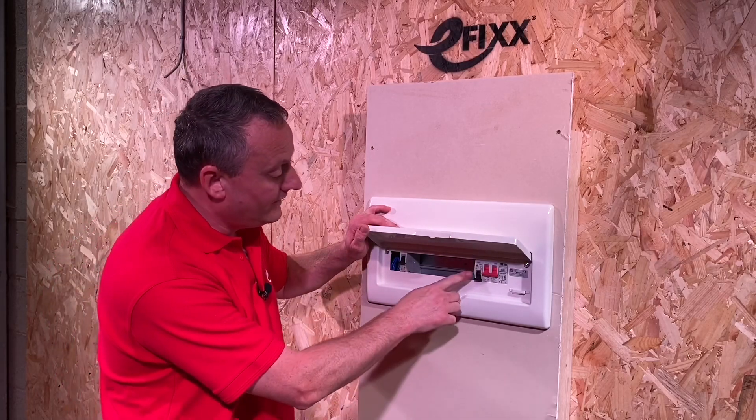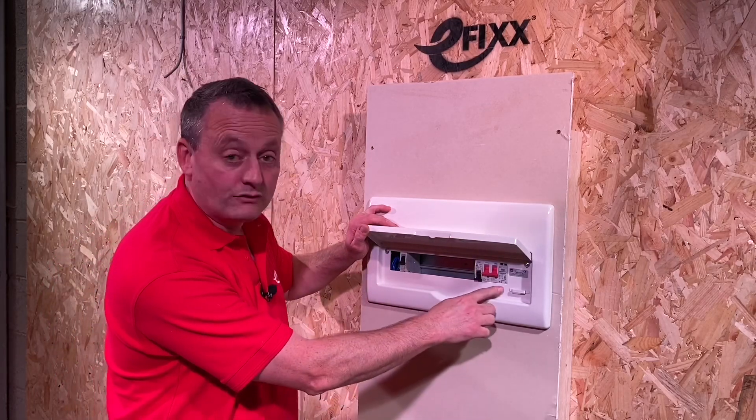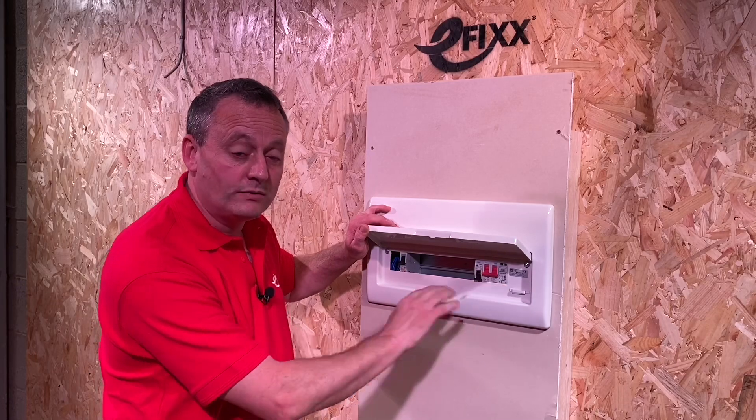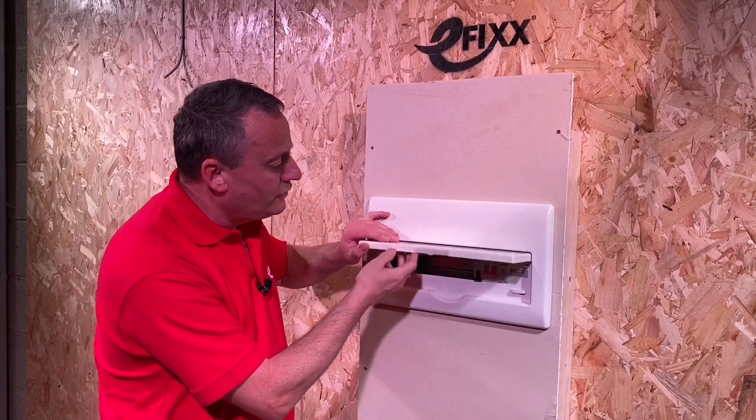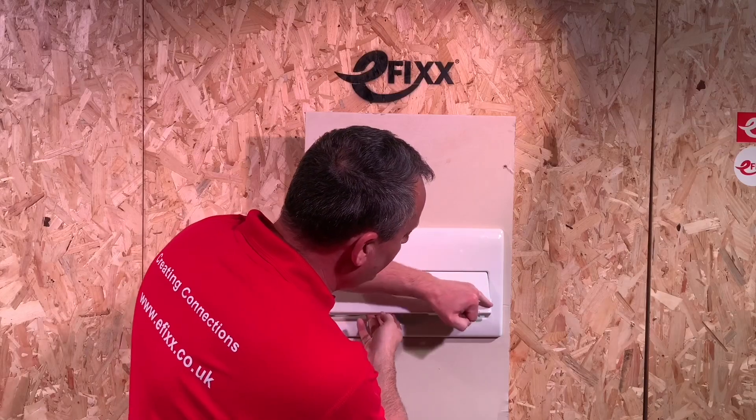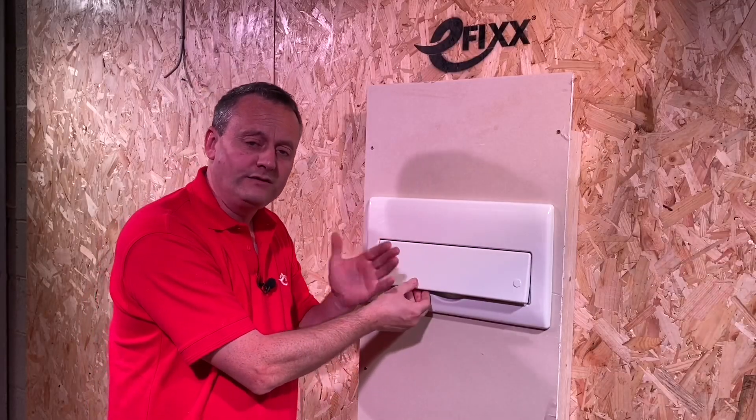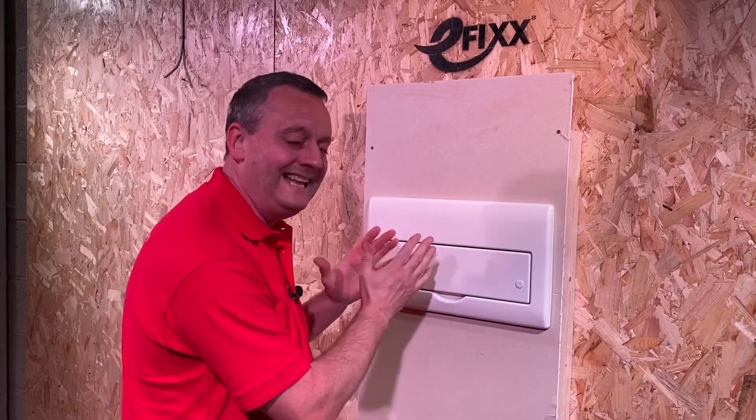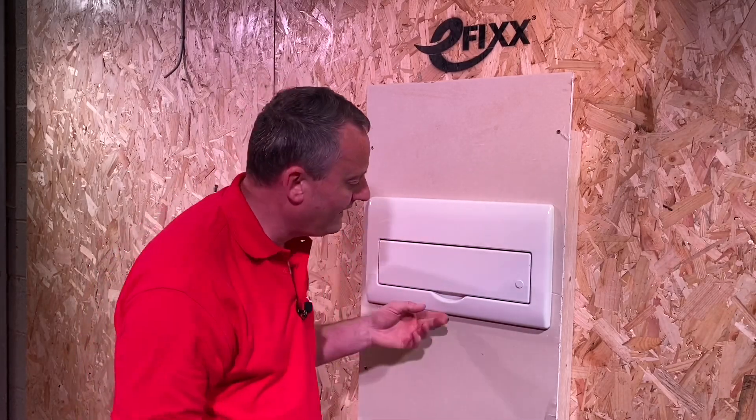I've already gone ahead and fitted a standard breaker and retrofitted a type two surge device, which I'll connect up later. Just to show you one thing on this one, this has been specified with the ability to lock it off. So you can fit a barrel lock. Maybe this is in the communal area and you want to control the amount of people that can get in there by having a locking device.